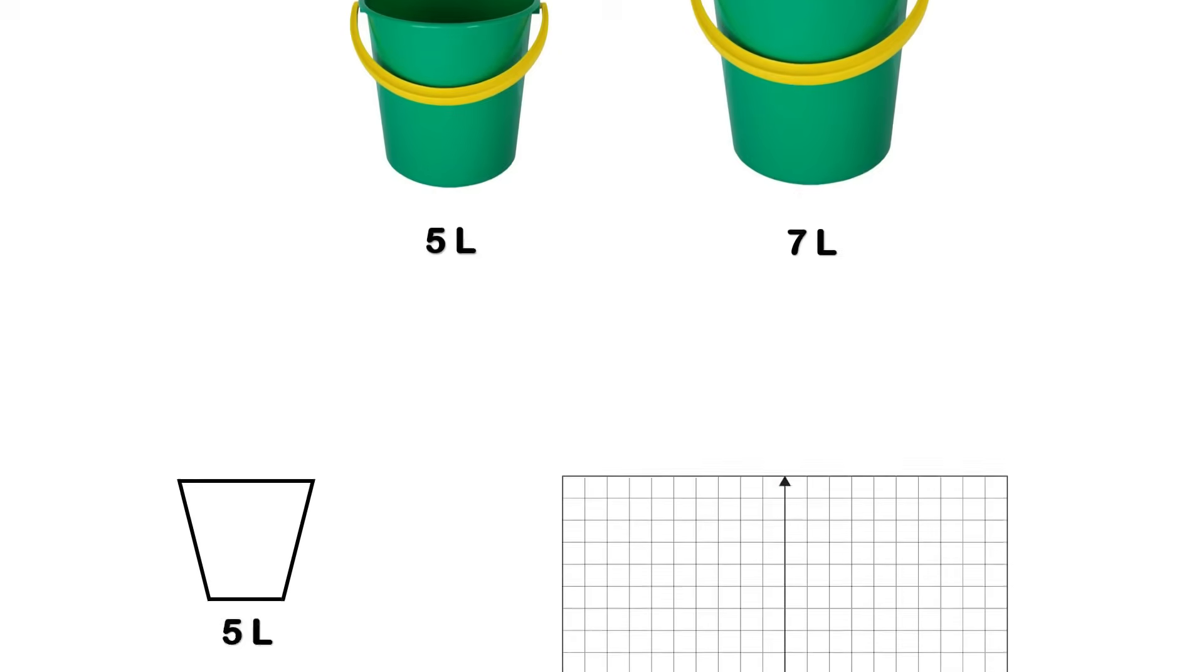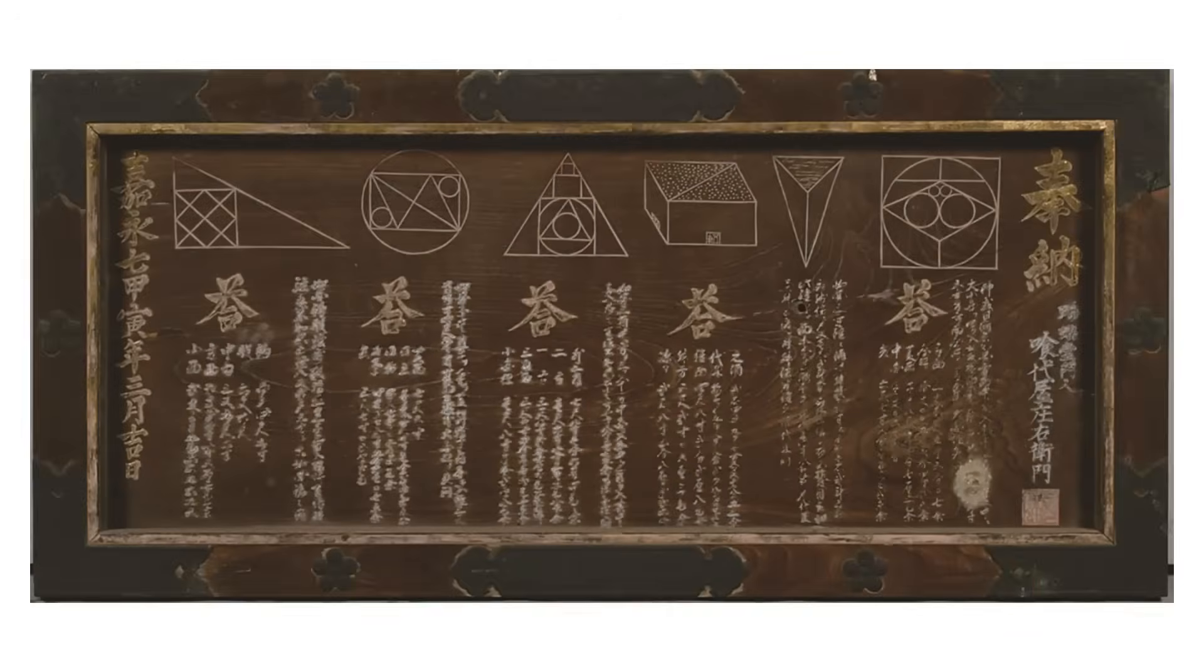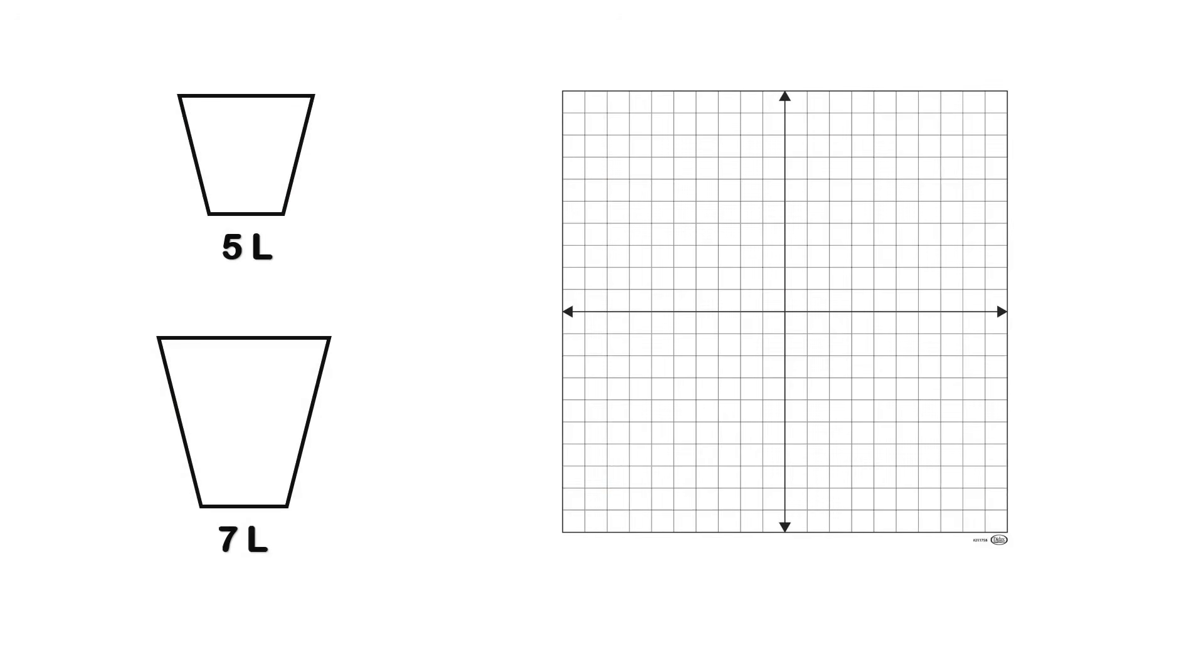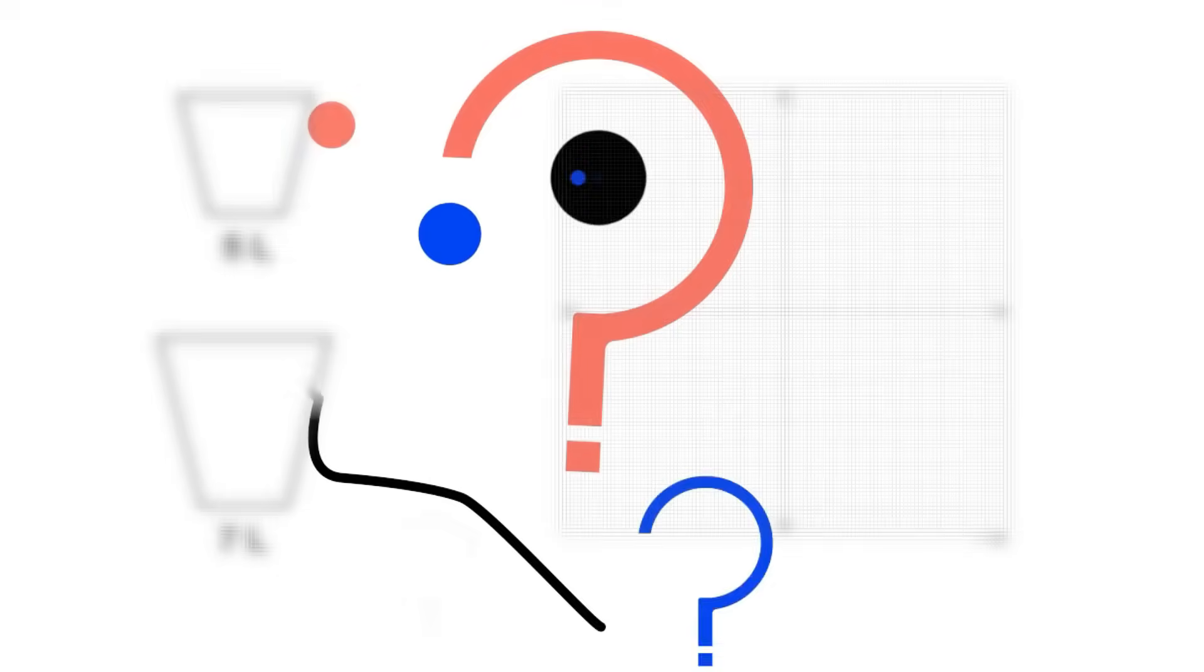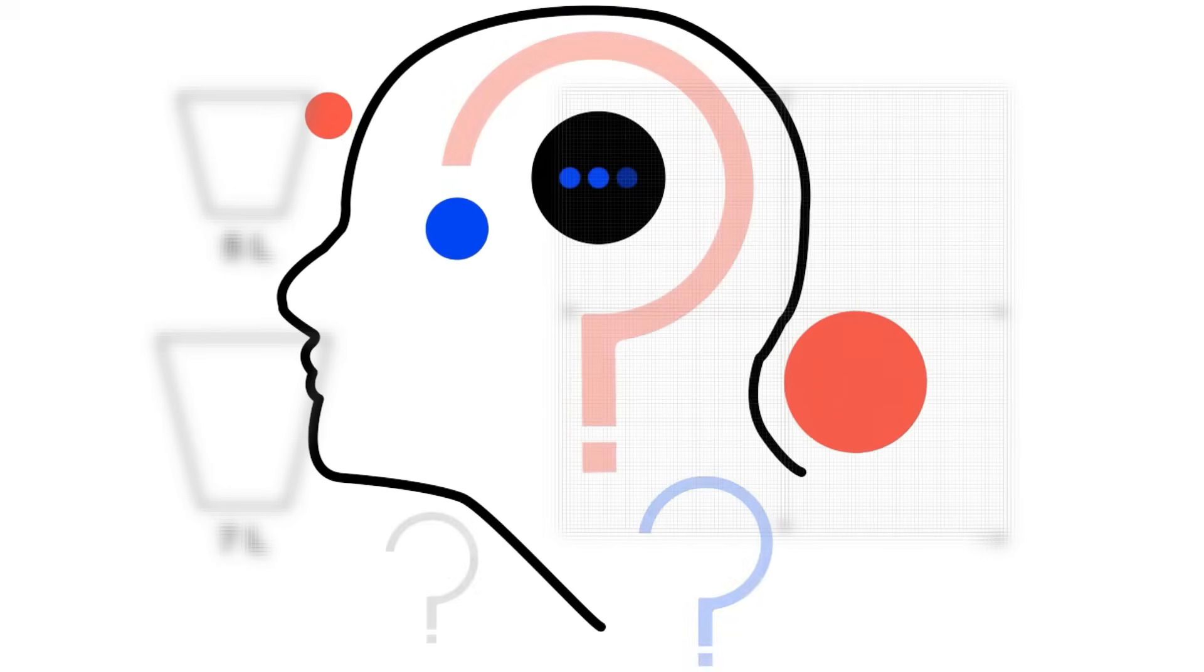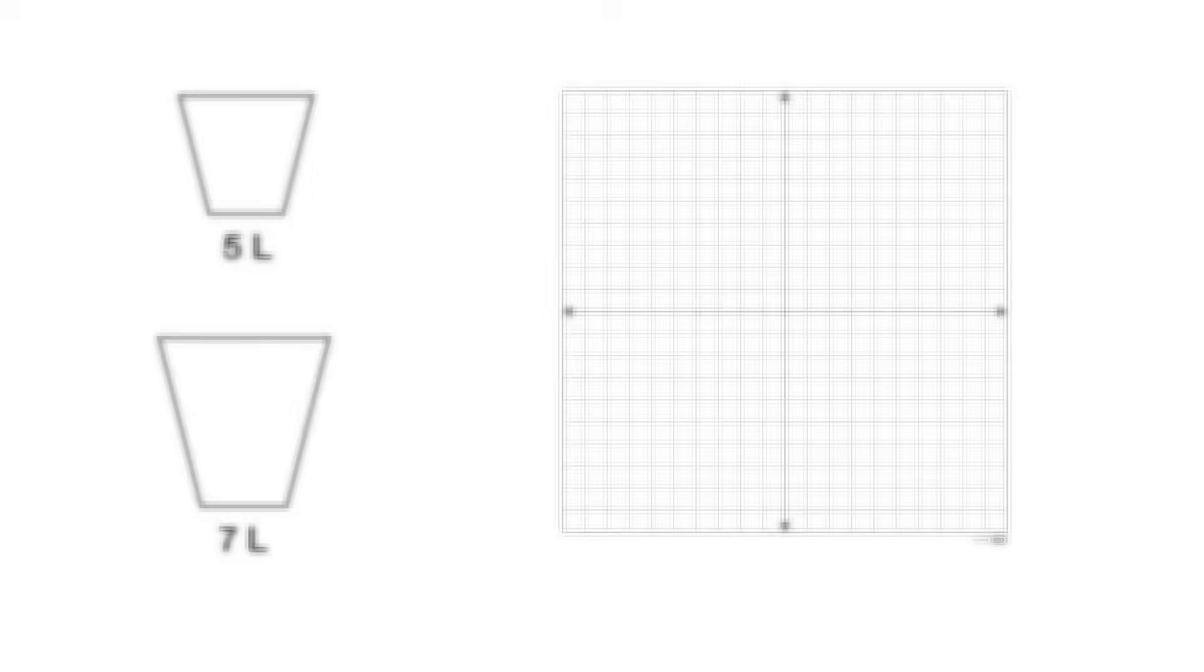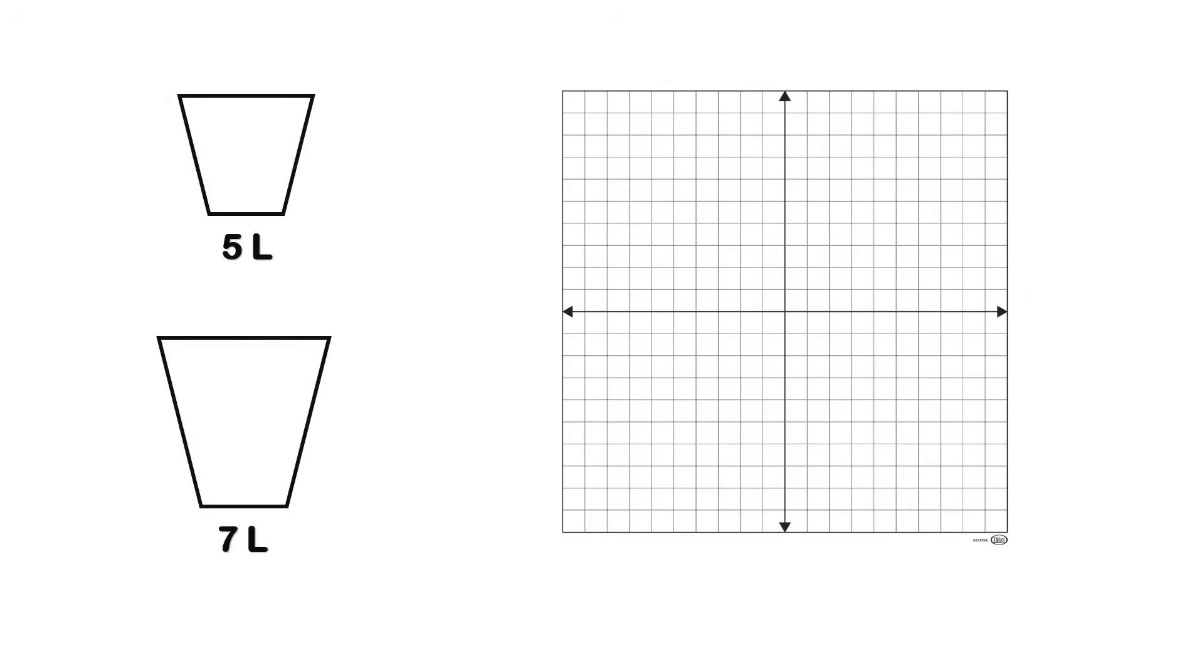Here we're going to use a technique inspired by Japanese mathematics, a method that turns the problem into a clear geometric picture instead of relying on trial and error. If you remember from math class, we often work with a two-dimensional coordinate system, a horizontal axis and a vertical axis, where every point is defined by a pair of numbers.